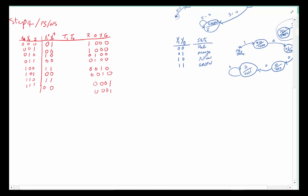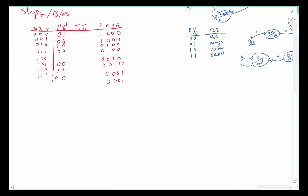The outputs are pretty simple — we don't even need a Karnaugh map to do them. We just look at these columns and write: red equals Y1-not · Y0-not; orange equals Y1-not · Y0; yellow equals Y1 · Y0-not; and green equals Y1 · Y0.